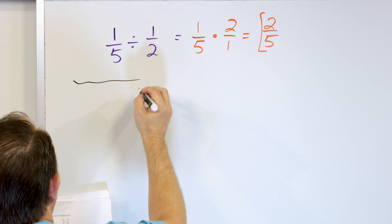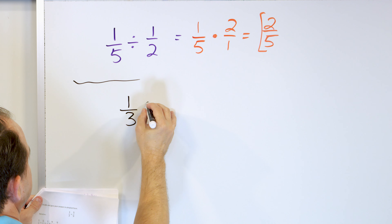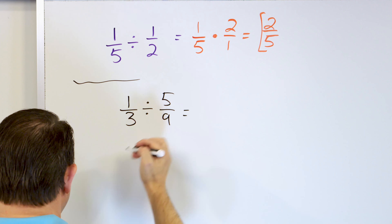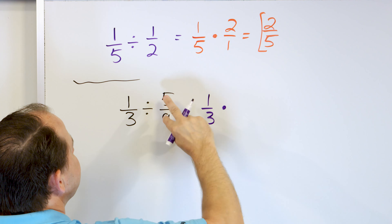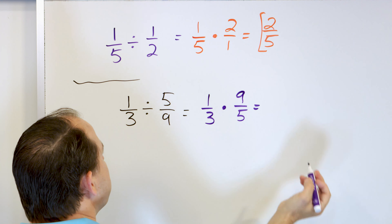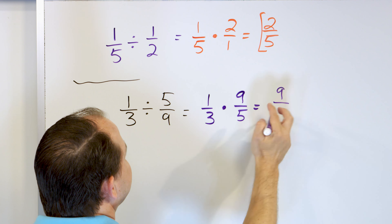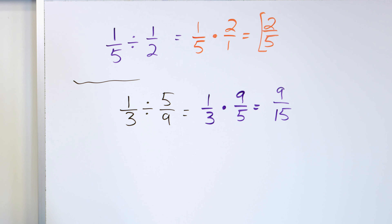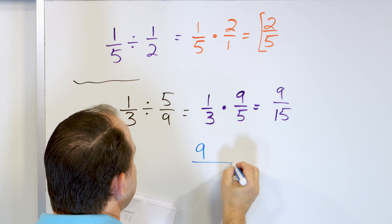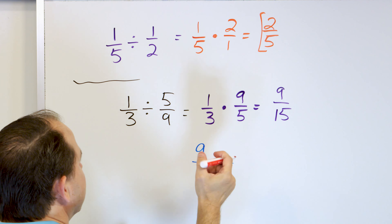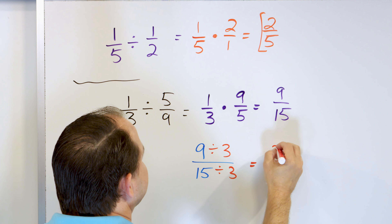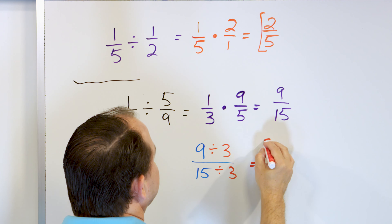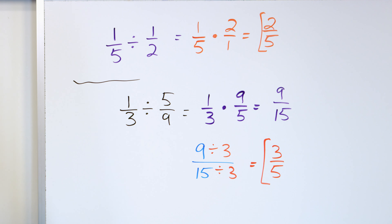We're on the home stretch, way past the halfway mark. One third divided by 5/9. Leave the 1/3 alone, change to multiplication, flip the second fraction to 9 over 5. Multiply: 1 times 9 is 9, and 3 times 5 is 15. Nine fifteenths is the answer, but it's not simplified. Divide top and bottom by 3: 9 divided by 3 is 3, and 15 divided by 3 is 5. The final answer is 3/5.